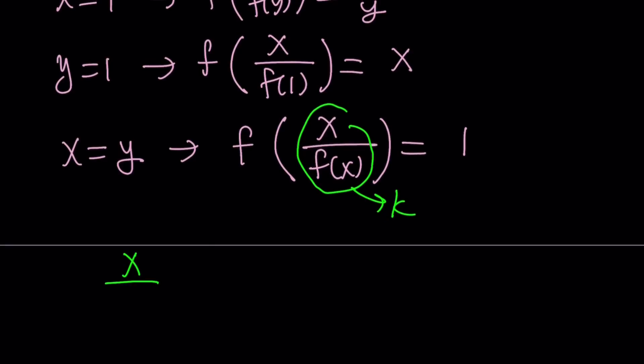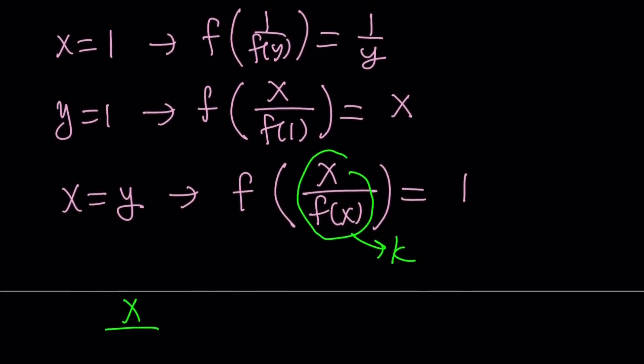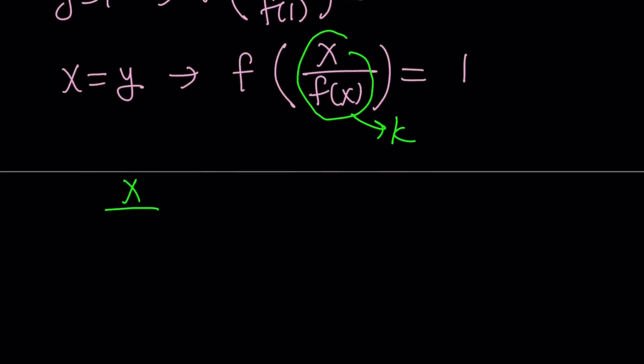So from here we get the following, because if k is a constant, then f of k equals 1 is possible because it's f of constant, right? So we're going to get x over f of x equals a constant k. And from here, f of x is just going to be x over k.